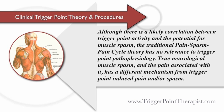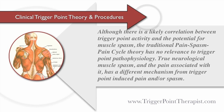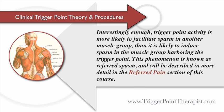Although there is a likely correlation between trigger point activity and the potential for muscle spasm, the traditional pain-spasm-pain cycle theory has no relevance to trigger point pathophysiology. True neurological muscle spasm and the pain associated with it has a different mechanism from trigger point induced pain and/or spasm. Interestingly, trigger point activity is more likely to facilitate spasm in another muscle group than it is likely to induce spasm in the muscle group harboring the trigger point. This phenomenon is known as referred spasm and will be described in more detail in the referred pain section of this course.